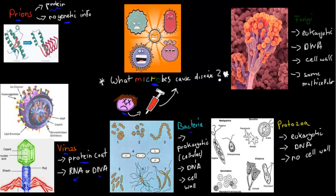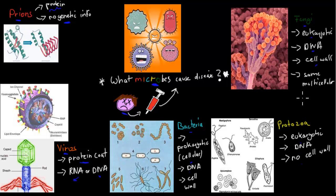We've got bacteria, which are cellular and prokaryotic — simple cells that have DNA and a cell wall. Protozoa are eukaryotic, not prokaryotic, have DNA, and have no cell wall. Fungi are eukaryotic, have DNA, have a cell wall, and can even be multicellular. Each of them has different characteristics, but the one thing they have in common is they can all cause disease.